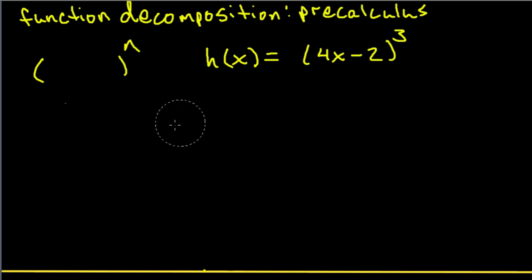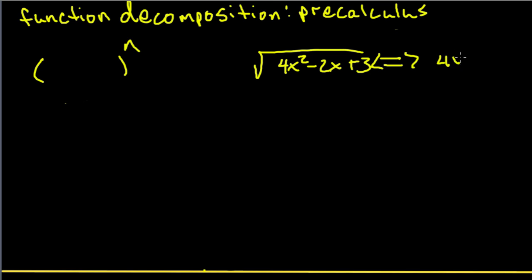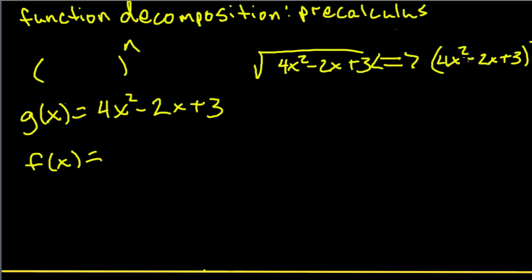One other example of this that you may not notice at first is if we have a square root. Square root minus 2x plus 3. And remember, this is equivalent to 4x squared minus 2x plus 3 to the one-half. So we're actually still within the confines of this rule where it's parentheses to a power. So we still have parentheses to a power. So remember, g(x) is what's in parentheses. So 4x squared minus 2x plus 3. And f(x), if we just put our finger over what we found g(x) to be, then we would have x to the one-half, which is also the square root of x. And we're done.